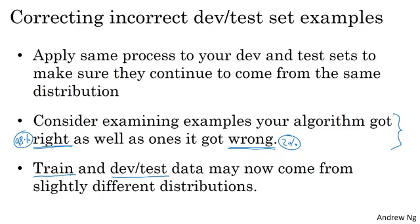And we'll talk later this week about some processes for handling when your training data is different in distribution than your dev and test data. Learning algorithms are quite robust to that. It's super important that your dev and test sets come from the same distribution, but if your training set comes from a slightly different distribution, often that's a pretty reasonable thing to do. And we'll talk more about how to handle this later this week.